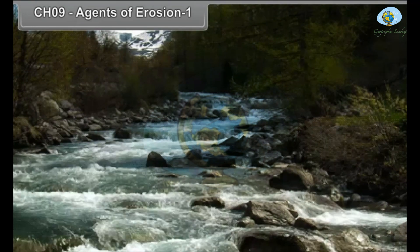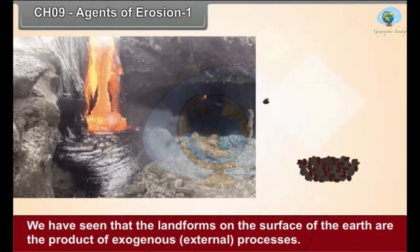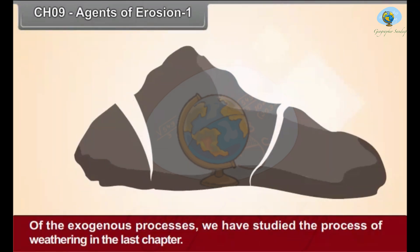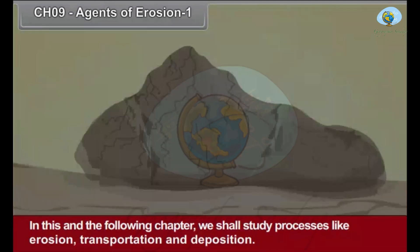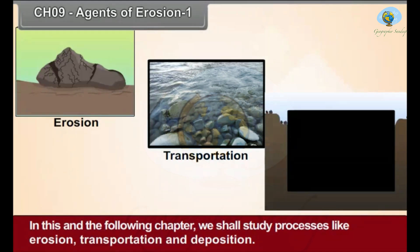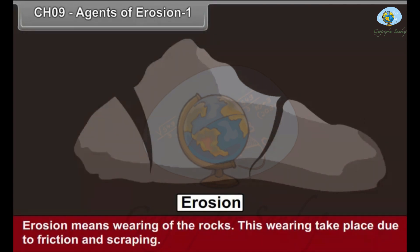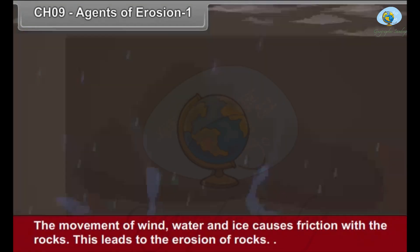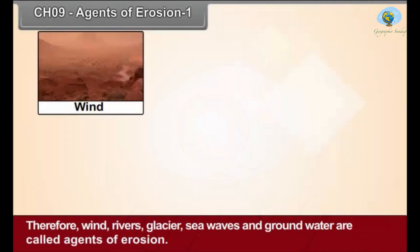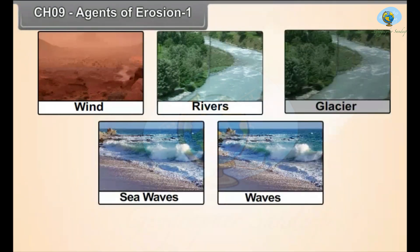Agents of erosion, part 1. The landforms on the surface of Earth are the products of exogenous external processes. Among these, we have studied weathering in the last chapter. In the following chapters we shall study erosion, transportation, and deposition. Erosion means wearing of rocks through friction and scraping. The movement of wind, water, and ice causes friction with rocks, leading to erosion. Therefore, wind, rivers, glaciers, sea waves, and groundwater are called agents of erosion.